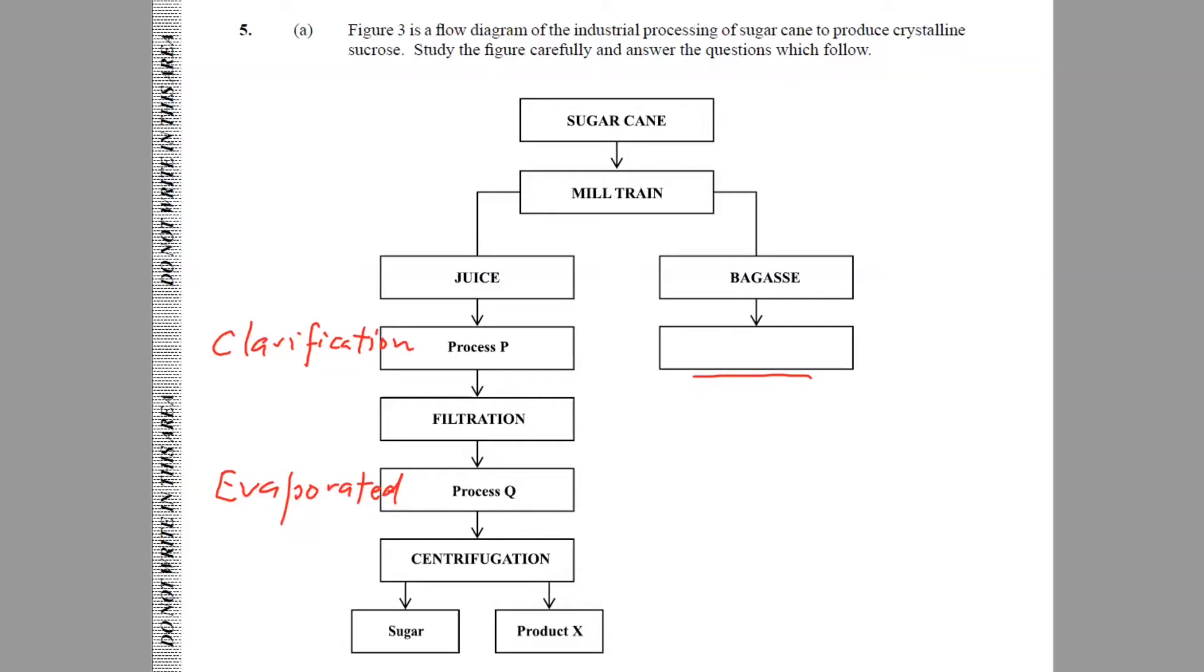Then we would have to have centrifugation. This is where the mixture after it's been evaporated, it's spun at high speed several times gravity to separate the sugar crystals from the liquid. Product X would be molasses. Molasses is further fermented to give rum, but we're not looking at that part as yet. At the top, we had mentioned the mill train. We get juice from the mill train and we get bagasse or what we call the trash, cane trash.